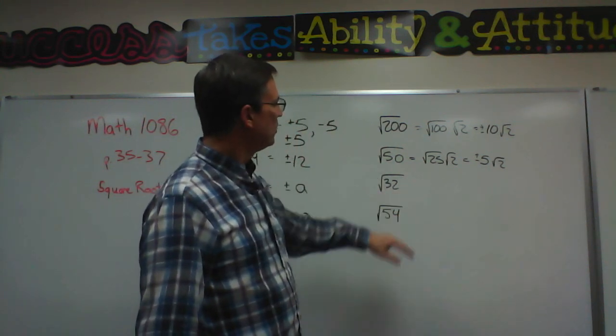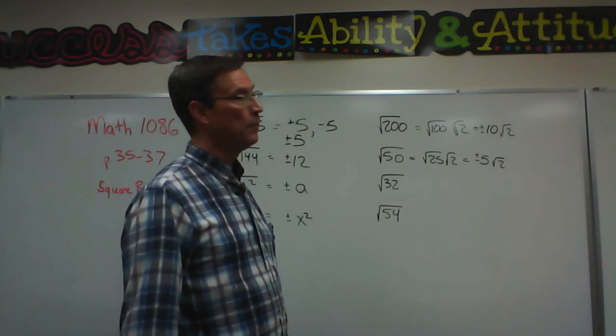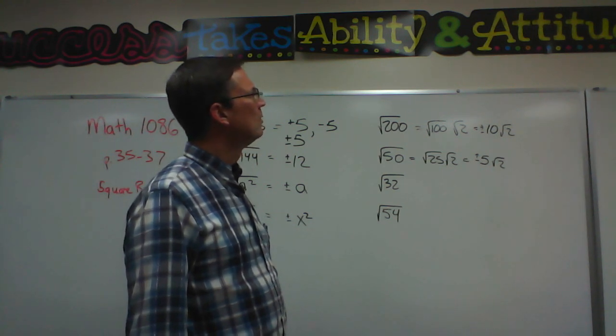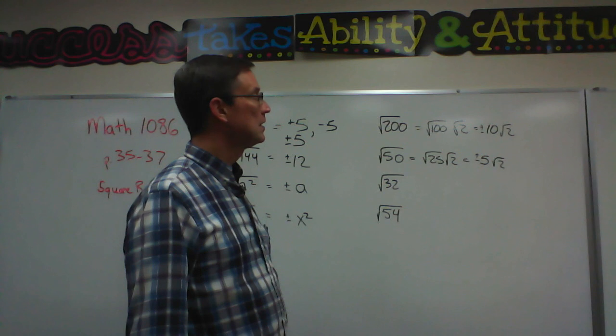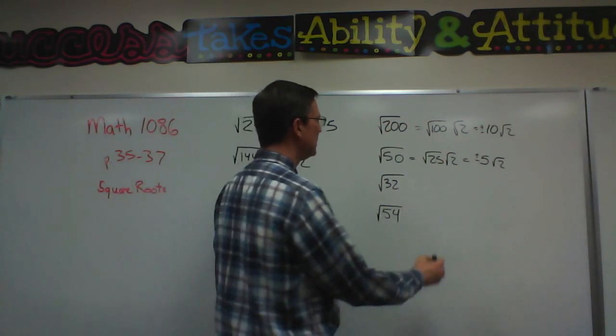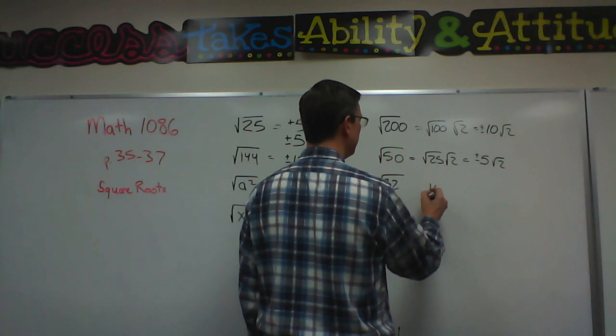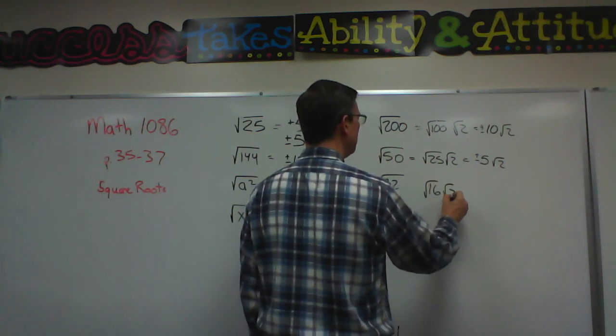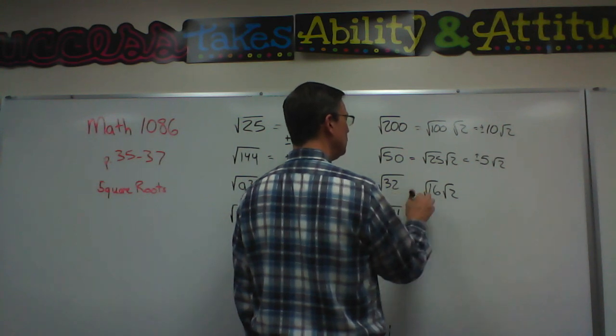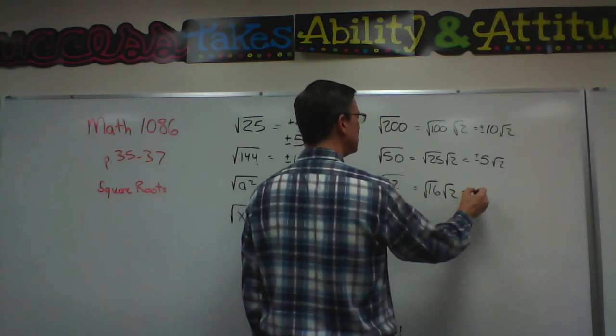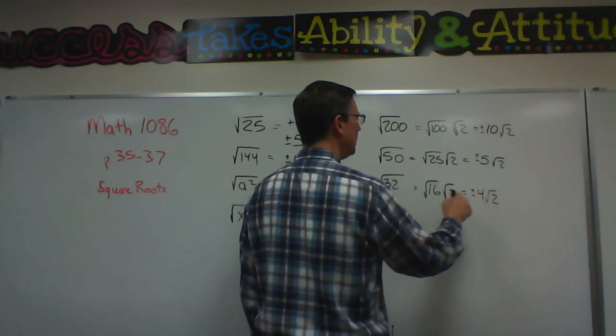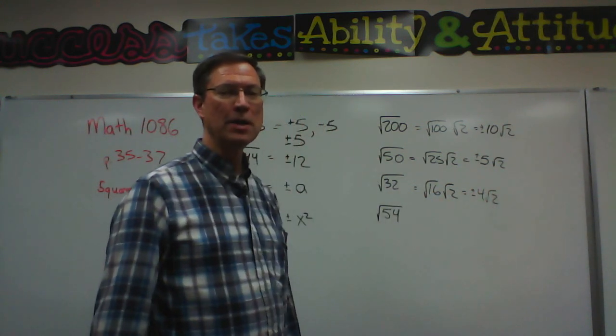Now 32, you can divide by 4. That's a perfect square. Let's see if we can go a little bigger. 4 times 4 is 16. So let's try 16, and that would be times 2. 16 times 2 is 32. And the square root of 16 is 4. So 4 square root of 2. I have a lot of square root of 2s in my answer. I didn't intend to do that.